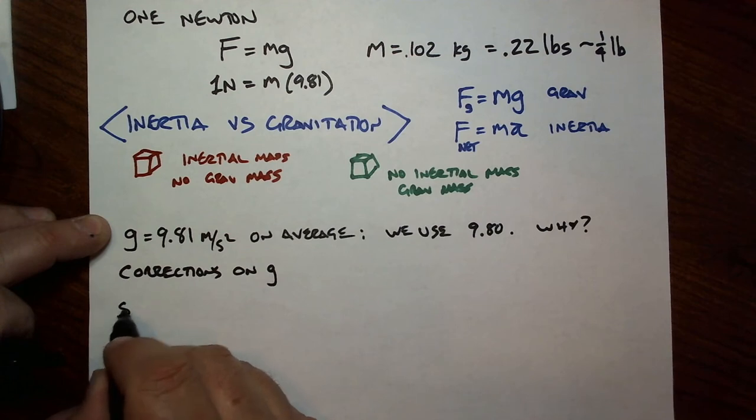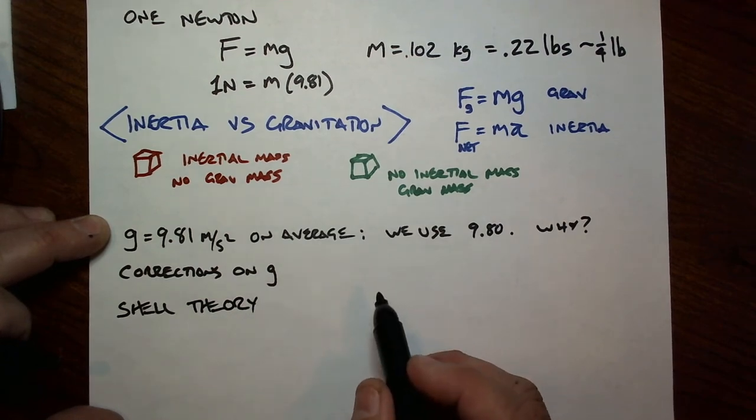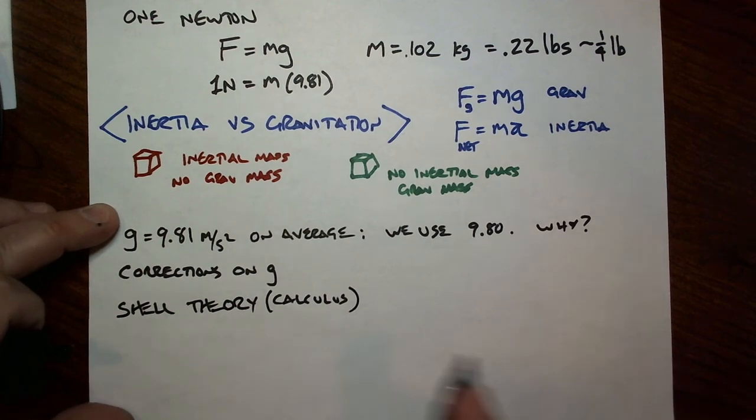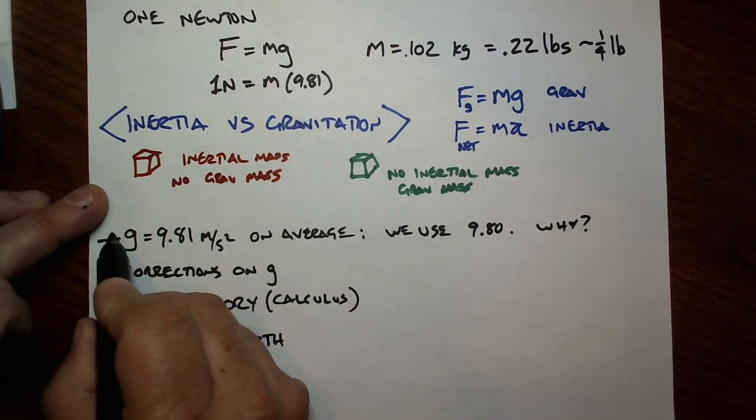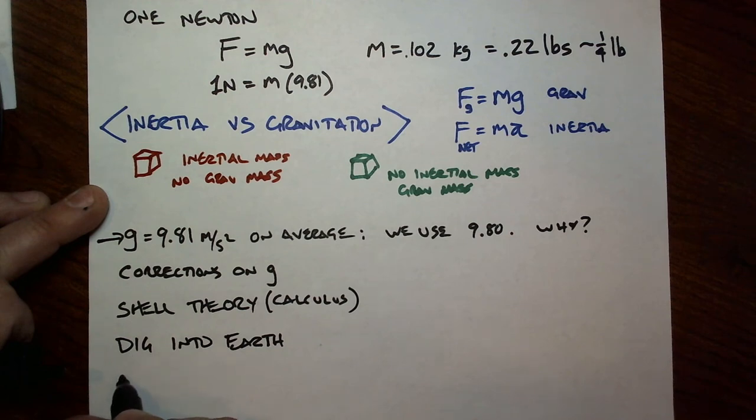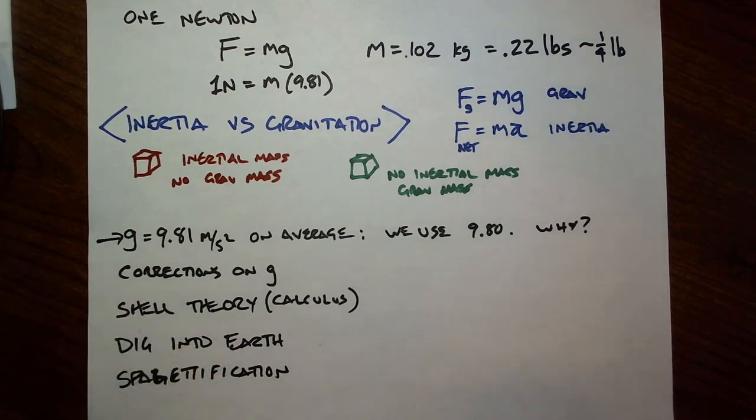So we're going to experience some corrections on g next time. And then I'm going to teach you about the shell theory, which explains why there was a delay between the apple falling and the publishing of these results. It's calculus. And then we're going to talk about doing some interesting things, such as what happens when you dig into the Earth, what happens to your gravitational attraction. All of these things related around g, the attraction to the Earth. So we're going to focus on the Earth for a little while. And then we're going to go cosmic and we are going to talk about spaghettification.